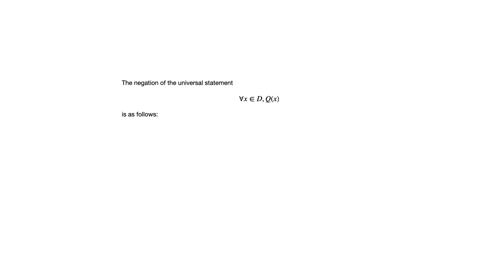If we negate a universal statement, notice the universal quantifier is replaced with the existential quantifier. So we begin with: for all x in d, q of x — and the negation becomes: there is an x in d such that not q of x.